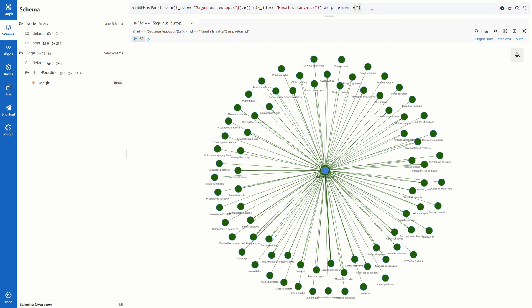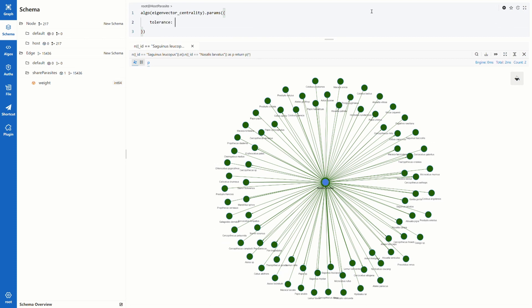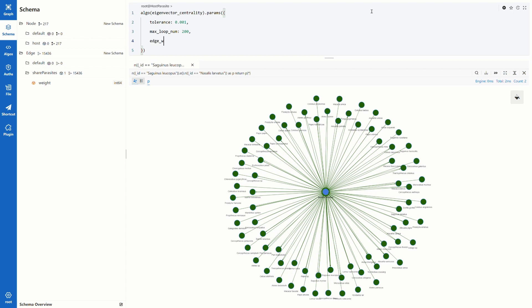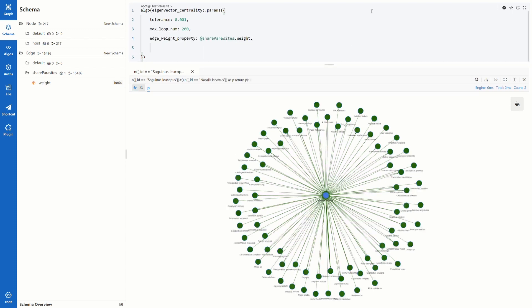Then let's write the algorithm. Algo eigenvector centrality. In Params, I set tolerance as 0.001, max loop num as 200. I think it should converge within the tolerance in less than 200 rounds though. Set the share parasites weight as the edge weight. Give it the descending order. I want to view host from high rank to low. And I'm interested in the top 20.